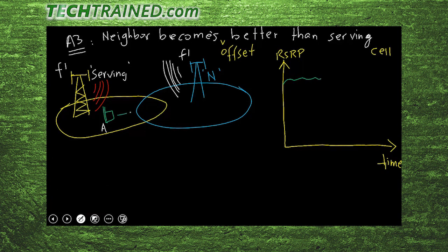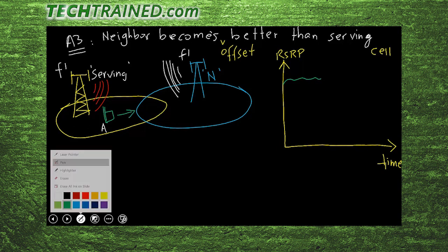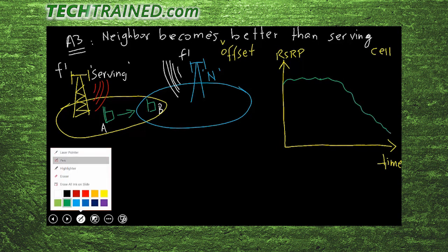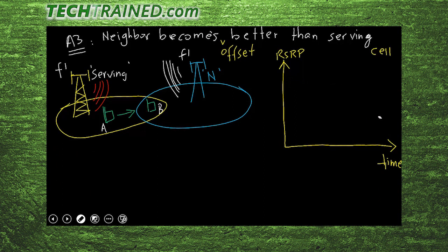Now let's say the user starts moving from position A towards position B, remaining connected to the serving cell. Position B is closer to the neighboring cell. As the user moves, the coverage of the serving cell will start to go down — drawn here in red — and at the same time the coverage of the neighboring cell will start to become better than the serving cell.